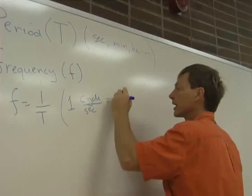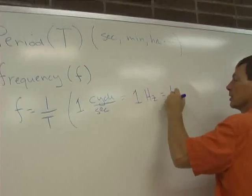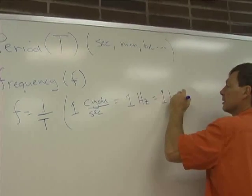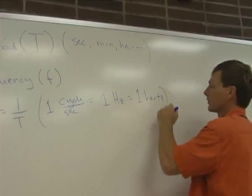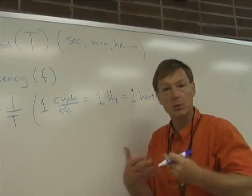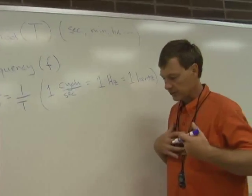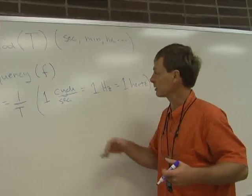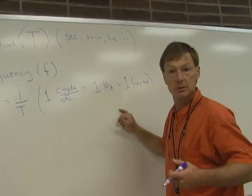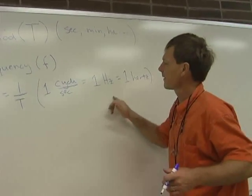And a cycle per second is also known as a Hertz, which is named after Heinrich Hertz. So if something's repeating one cycle per second, your heart rate's about 60 beats per minute, but it's about a cycle per second, a beat per second. That'd be one Hertz. So your heartbeat's usually a little over a Hertz.